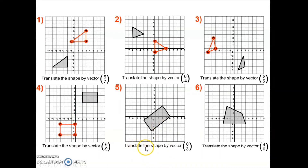Question five, we're going to translate this shape by the vector zero, three. So we're moving zero to the left or right — there's going to be no horizontal movement — and three squares up. Each individual point simply moves three up, then with my ruler I draw in my new shape, my image. Finally, question six: we are moving four to the right and zero up or down, so there's no vertical movement this time. Each individual point moves four to the right, then I draw in my image.